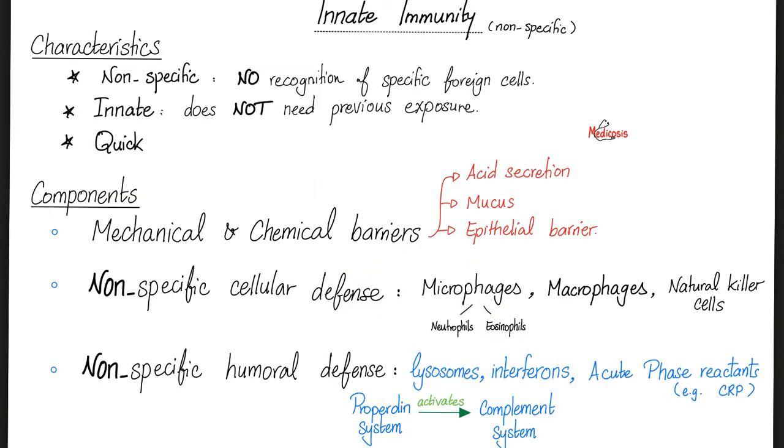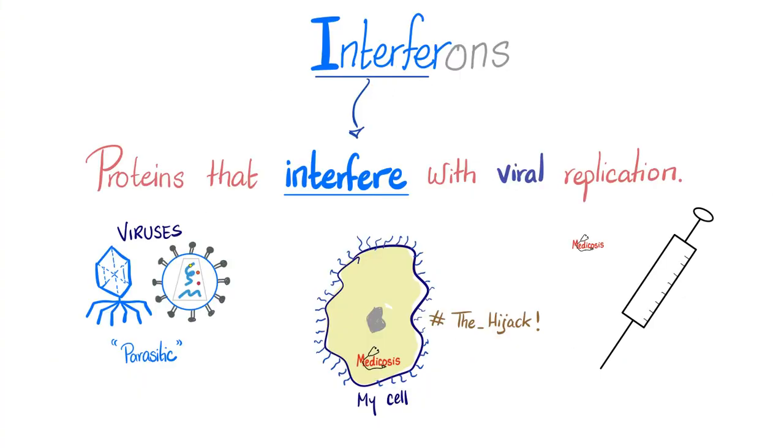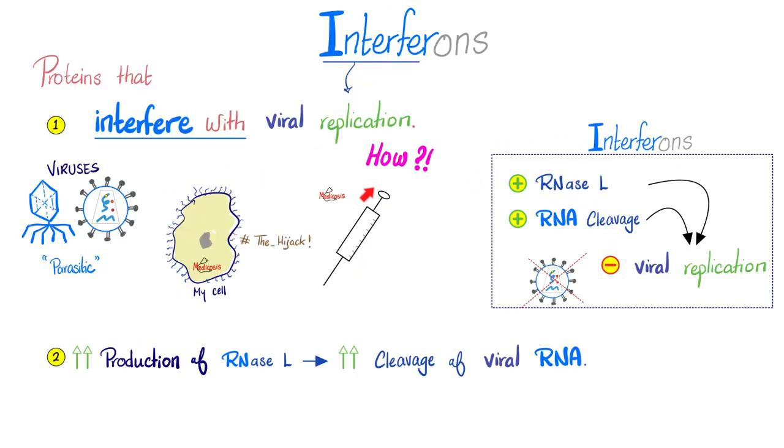If you have watched my biology playlist, I've told you before about interferons. Why did we call them interferons? Because they interfere with viral replication. What a beautiful name. But how did they do it? Well, they increased production of RNases, which is an enzyme that breaks down RNA so that the virus cannot replicate. Remember, no RNA equals no protein synthesis. The virus without proteins is toast.